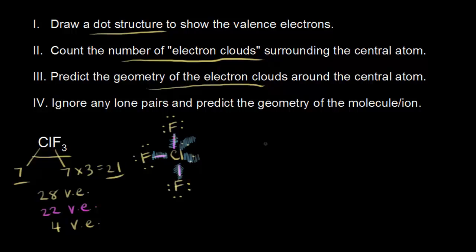We place our lone pairs of electrons in the equatorial positions. So with the central chlorine, one lone pair goes equatorial, and the other lone pair also goes equatorial. That leaves one equatorial spot for a fluorine, and the remaining two fluorines go in the axial positions. Placing lone pairs equatorial minimizes electron pair repulsion.